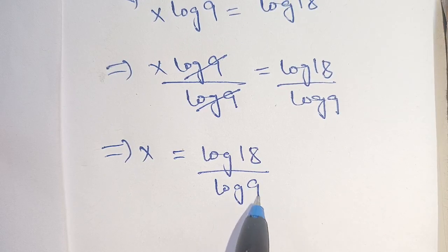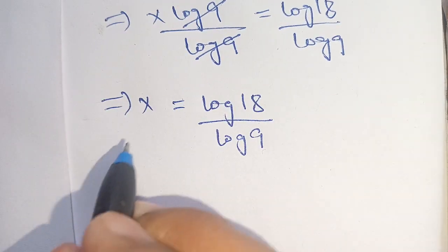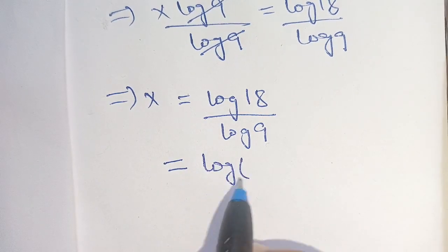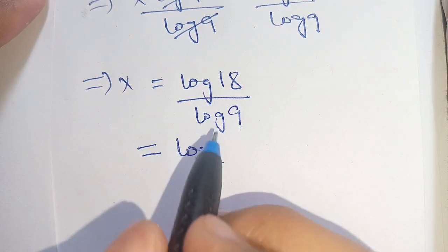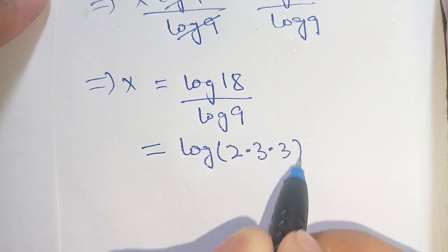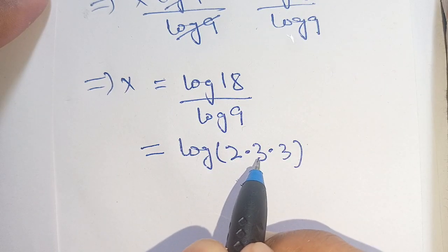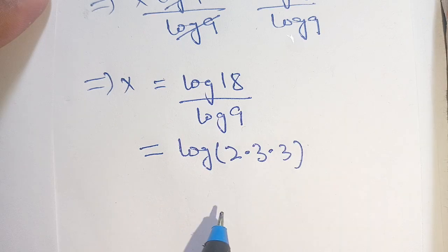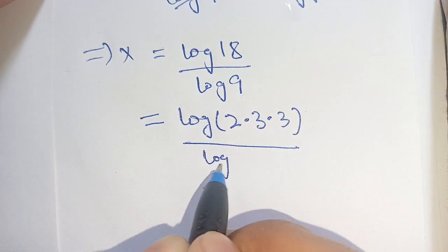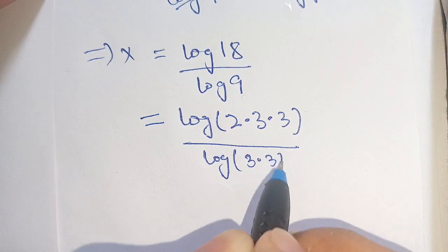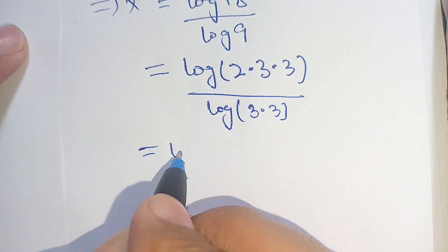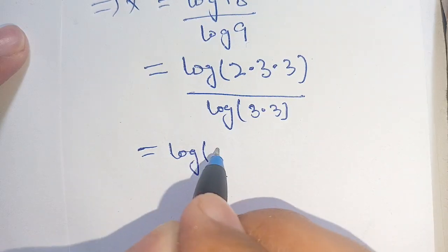In the next step, we can write 18 as 2 times 3 times 3, and 9 as 3 times 3, which is 3 squared. So x equals log of 2 times 3 squared divided by log of 3 squared.